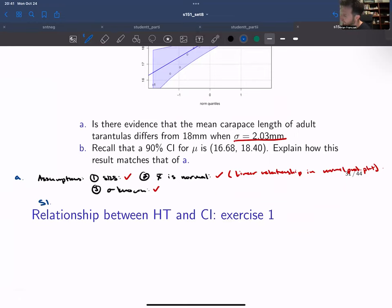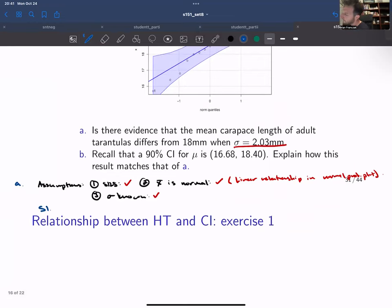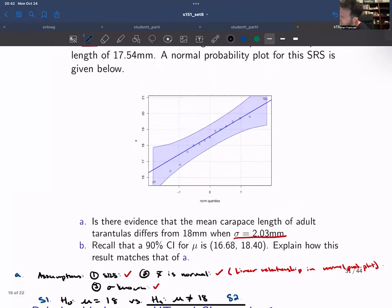On step one, we want to know if there's evidence that the mean carapace length differs from 18. So the null hypothesis will be mu equals 18 versus the alternative that mu is different from 18. We use the alternative to reflect the question of interest.